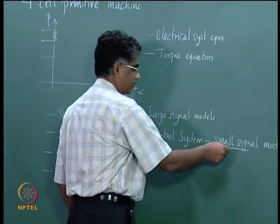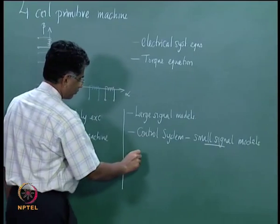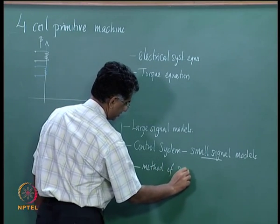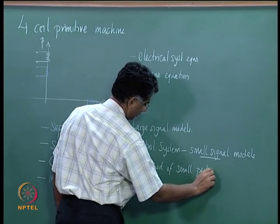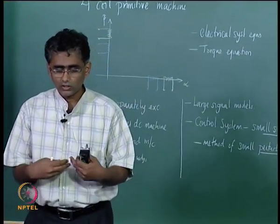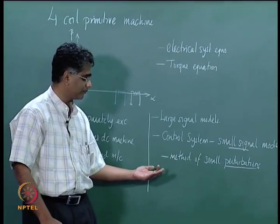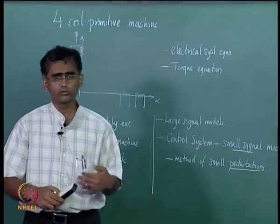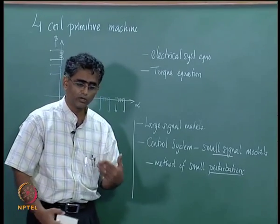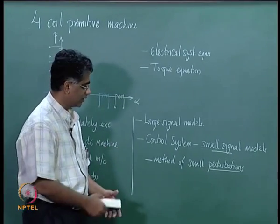We started looking at what the small signal models are. Small signal models are obtained from large signal models by certain approximations. One can use the method of small perturbations, which are essentially disturbances applied to the input signals to the machine. In response to these small disturbances, the output variables of the system also show some disturbances, and one can derive a linear relationship between the input disturbances and the disturbance response.